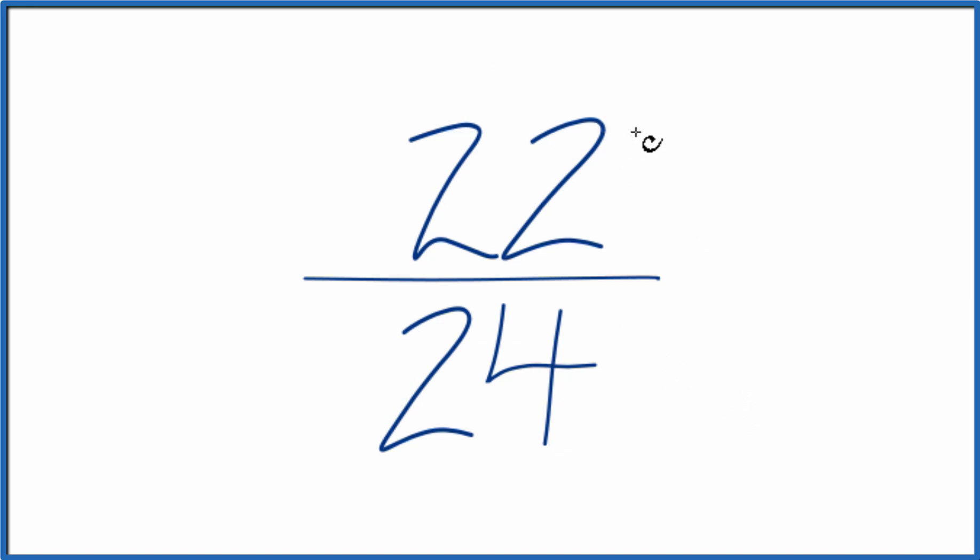So we need to find a common factor, something that goes into 22 and 24 evenly. The only number that will go into both 22 and 24 is 2. So let's just divide 22 by 2.